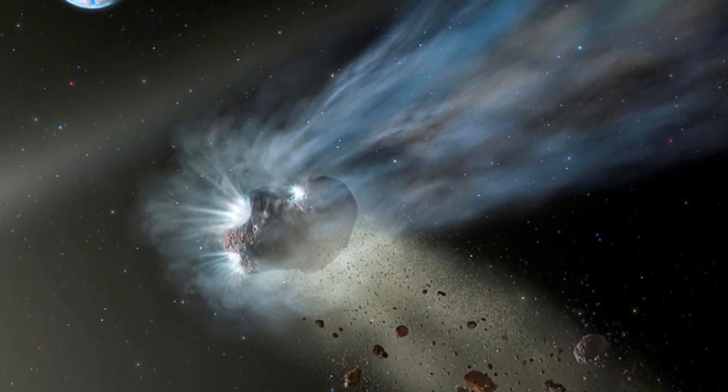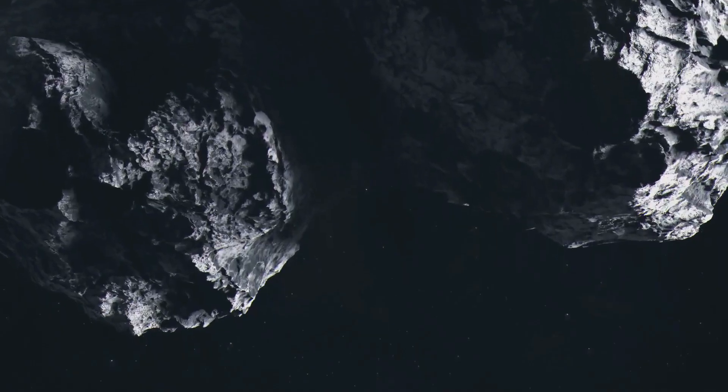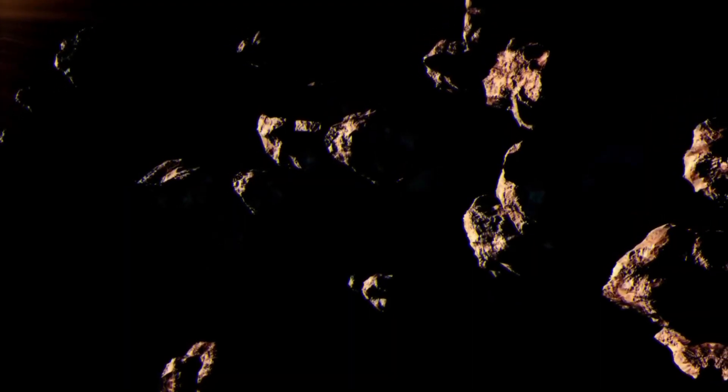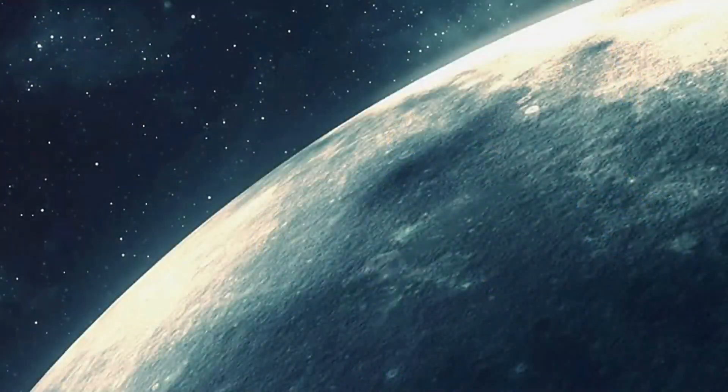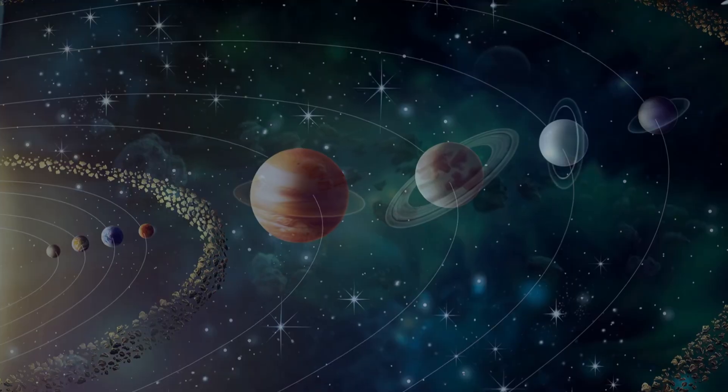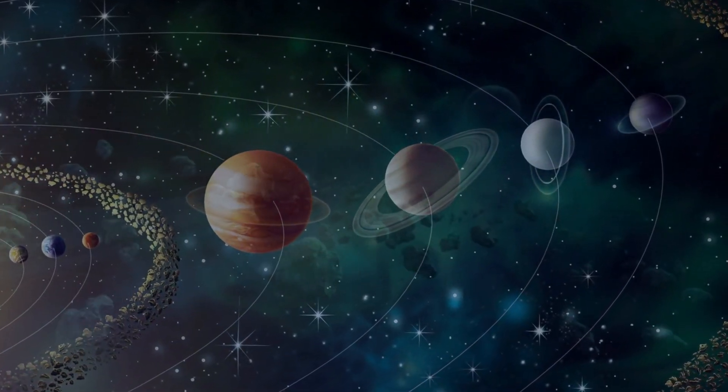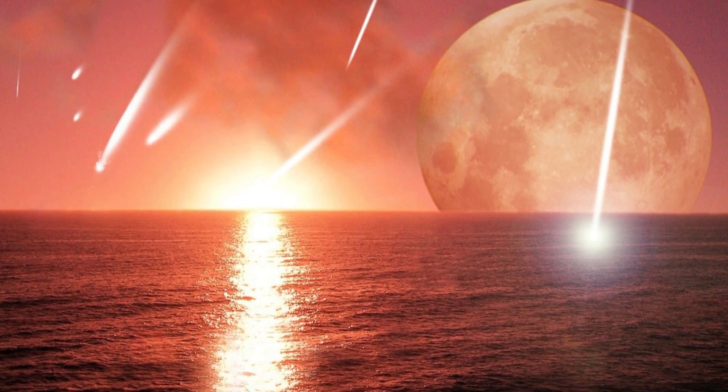Real World Connection: NASA's OSIRIS-REx mission, which recently returned samples from the asteroid Bennu, is a prime example of how space agencies are investigating the role of space objects in the origins of life. Though Bennu is an asteroid, the mission's findings could provide crucial insights into the kinds of materials that may have been delivered to early Earth through comets and asteroids, further supporting the idea that dark comets could have played a similar role.